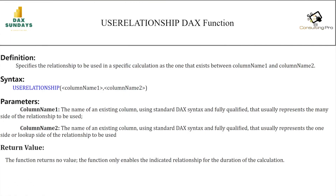The very first function is USERELATIONSHIP, which specifies the relationship to be used in a specific calculation as the one that exists between column one and column two. This means that if you want to take advantage of an inactive relationship — for example, my active relationship is based on Order Date and the Date column in the Date table — but if I need to calculate the total sales amount on the basis of Ship Date rather than Order Date, then I can utilize this DAX function.